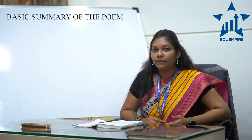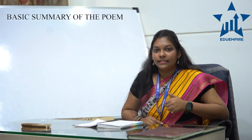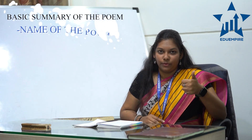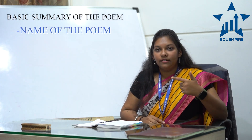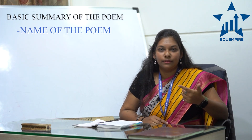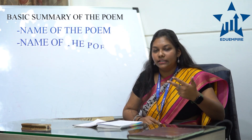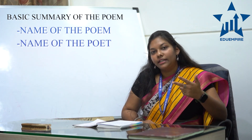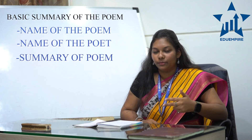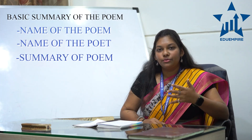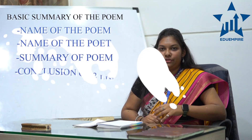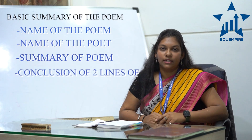The second step is to apply the following order: start by giving the name of the poem, then the poet's name — that is, who has written the poem. Third, give a three to four line short summary of the poem and conclude it with two lines of what you have understood from the poem.